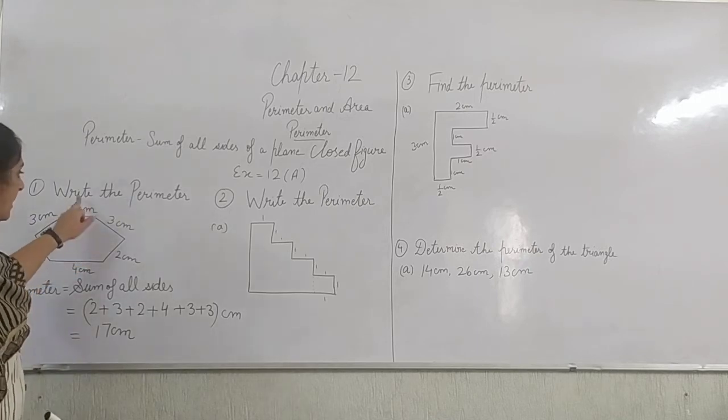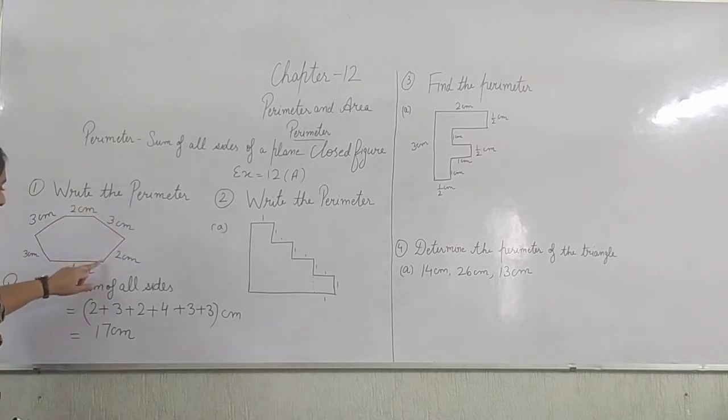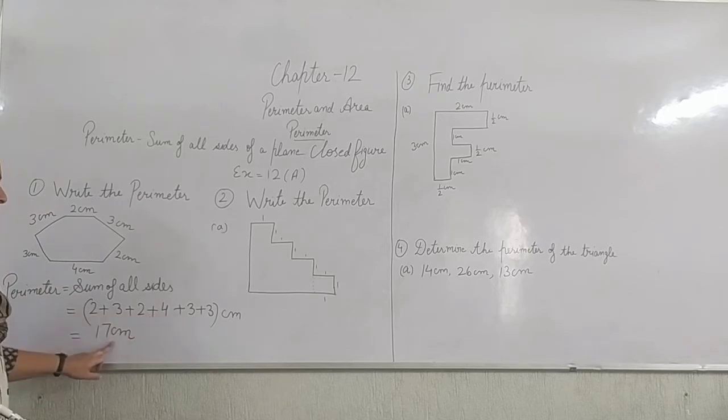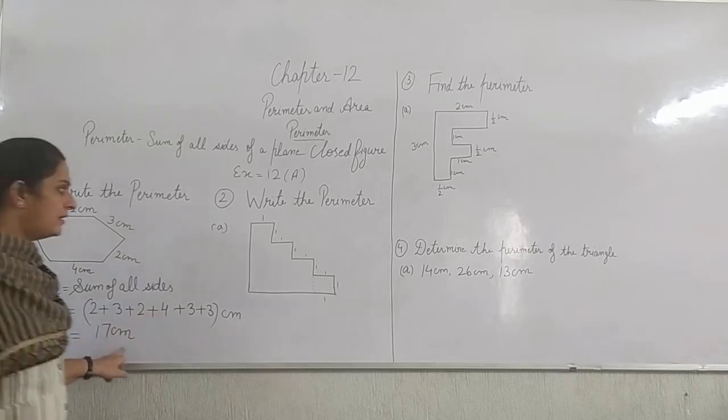So 17 centimeters is the perimeter of this given plane figure. We added all the outer sides together and got the perimeter.